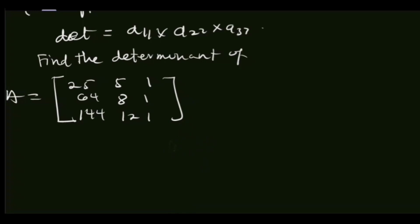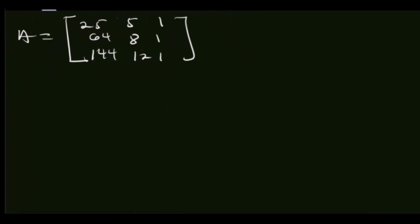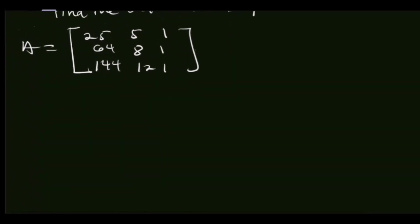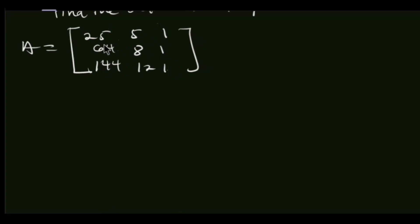That is the Naive Gaussian elimination, since we also have Gaussian elimination with partial pivoting. Naive Gaussian elimination deals with expressing our matrix into an upper triangular matrix by eliminating the lower terms so that we get an upper triangular matrix.